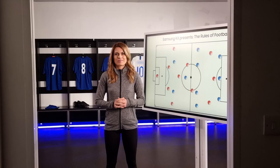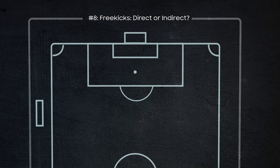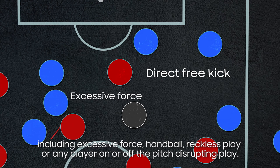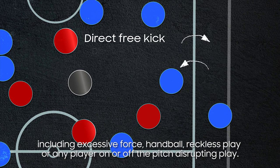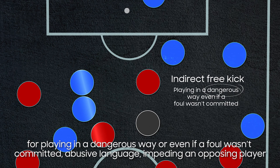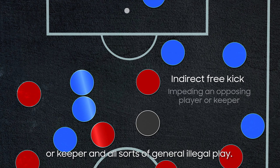The ref blows the whistle and a free kick is awarded, but how do you know if it's direct or indirect? The simplest way is: if the referee raises their hand horizontally, it's a direct free kick, given for reasons including excessive force, reckless play, or any other player on or off the pitch disrupting play. An indirect free kick is less serious and awarded when the ref raises their arm vertically, and could be for playing in a dangerous way or even if a foul wasn't committed — abusive language, impeding an opposing player or keeper, and all sorts of general illegal play.